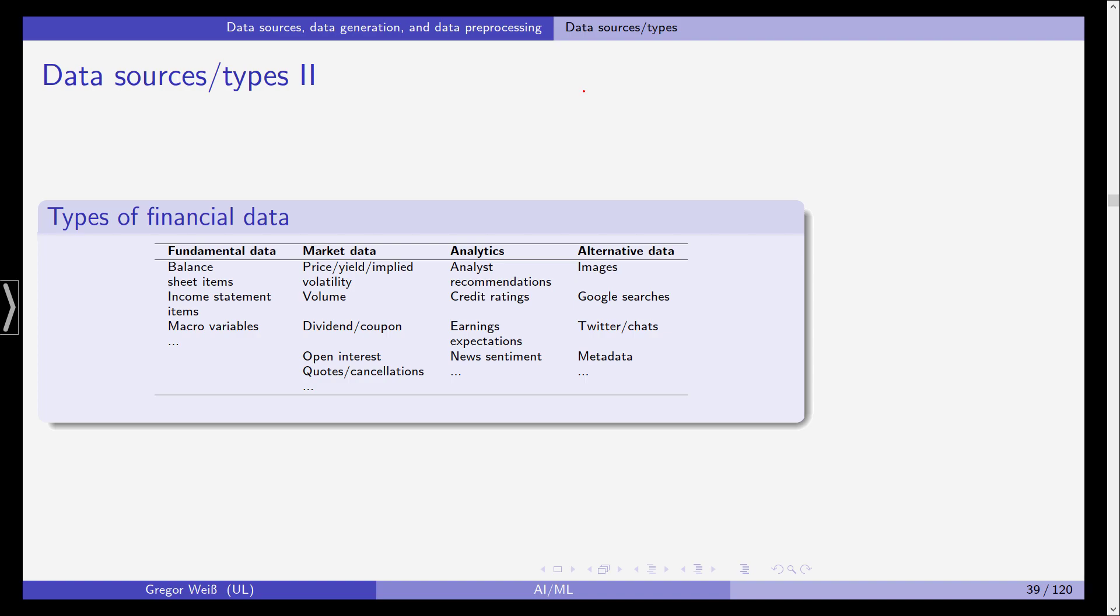We have, in the third category, analytics, which uses fundamental and market data and creates what we would later call features in machine learning. We have analyst recommendations, credit ratings, earnings expectations, and news sentiments. So this has already been processed data. It focuses on market data, fundamental data, and complements this data with, for example, the recommendation of a financial analyst.